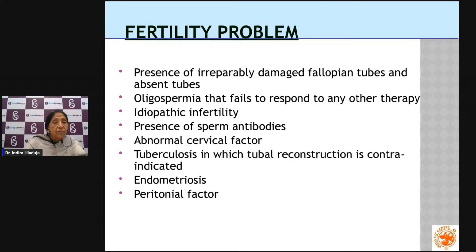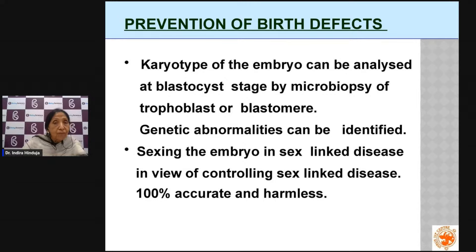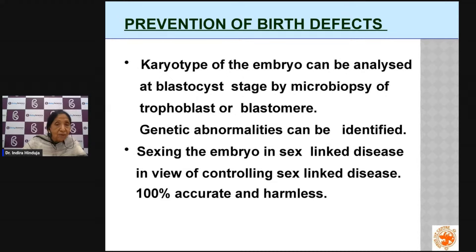Adhesions due to infections such as appendicitis, colitis, or tuberculosis can make the tubes adherent and impair their capacity to pick up the egg. If there is a history of abnormal babies in the family, we can study the embryo to confirm it is normal before transfer. For sex-linked diseases like hemophilia — where the man is affected and the female is a carrier — we can identify whether the embryo carries the condition and insert only the healthy embryo into the uterus.